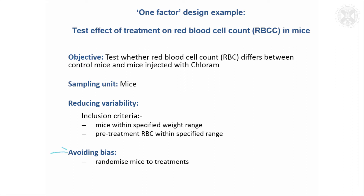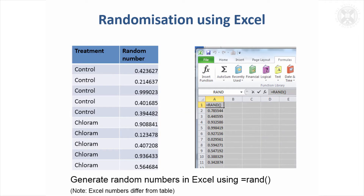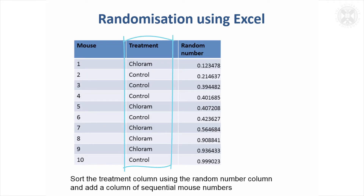We don't want to end up with bias, so rather than allocating maybe the first set of mice to one treatment and then the second set to another, it would be a good idea to randomize the mice to the treatments. Just as in the last example, in Excel you can use the RAND function to generate random numbers and sort by that random number to get a random list of treatments — that's what's been done there.